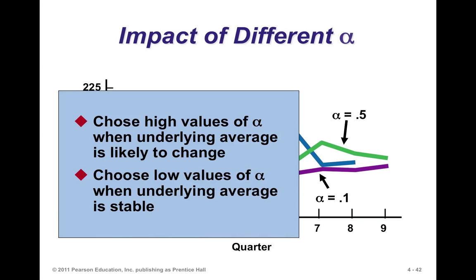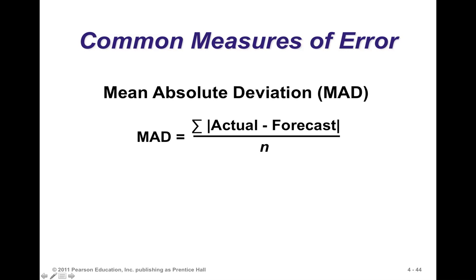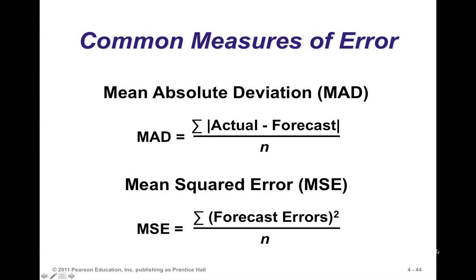Choose high values of alpha when you believe the underlying average is likely to change, and use low values of alpha when things are fairly stable. The objective in choosing alpha is to obtain the best forecast possible, which you can do through experimentation or by using Solver in Excel. We'll pause here and continue with errors in forecasting in the second video.